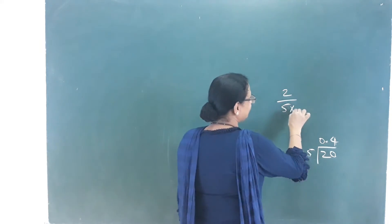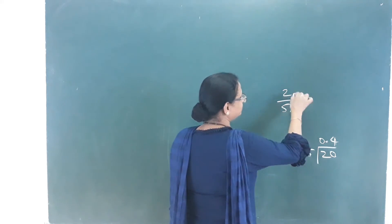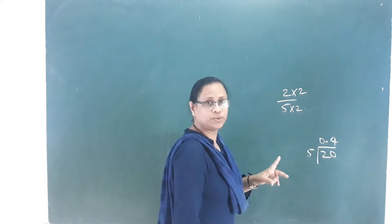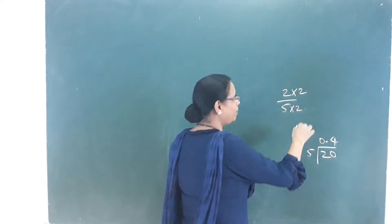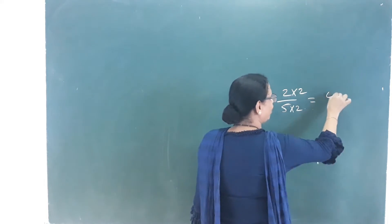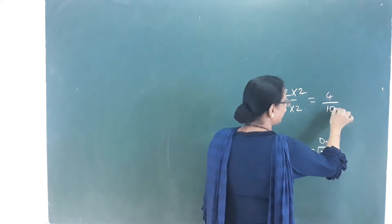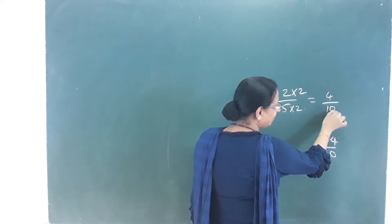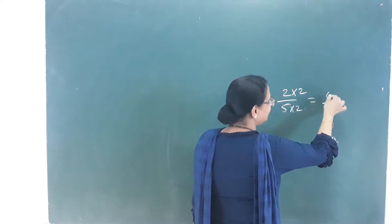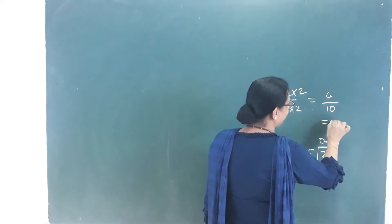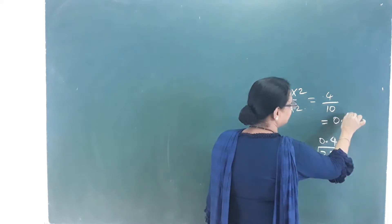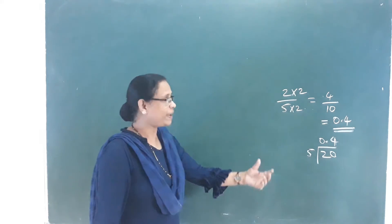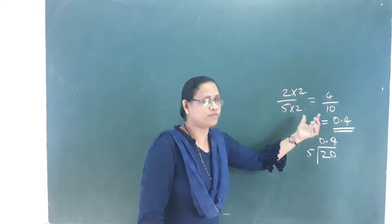For the proper fraction 2 by 5: multiply numerator and denominator — 2 into 2 gives 4, so we get 4 by 10. That means the decimal is equal to 0.4. That's the basic conversion.